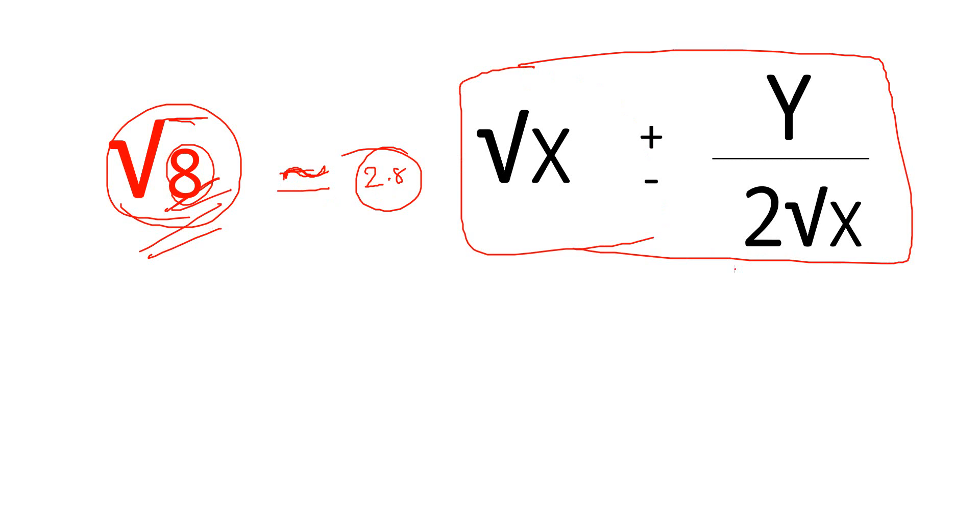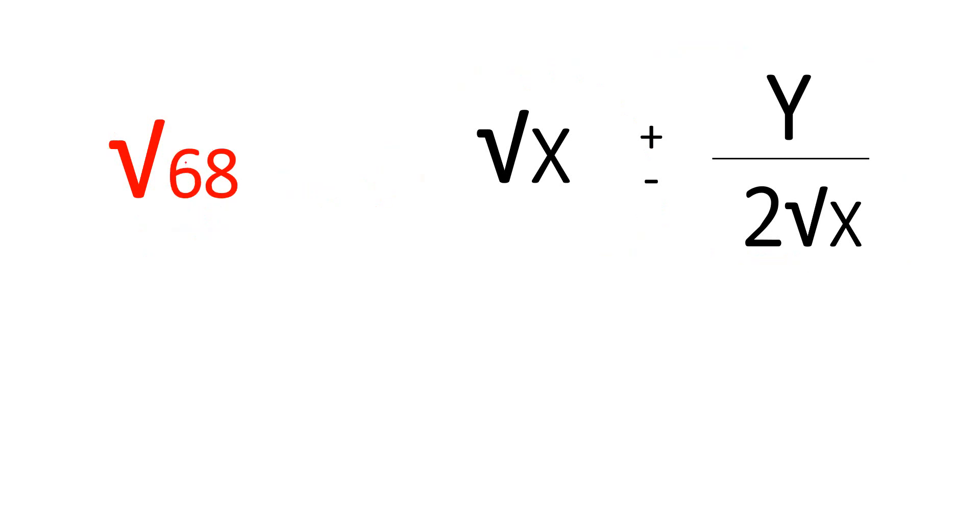For example square root of 68. For square root of 68, 64 is 8 square. We can write 64 plus 4. This is x value, this is y value. This is x value, this is y value.